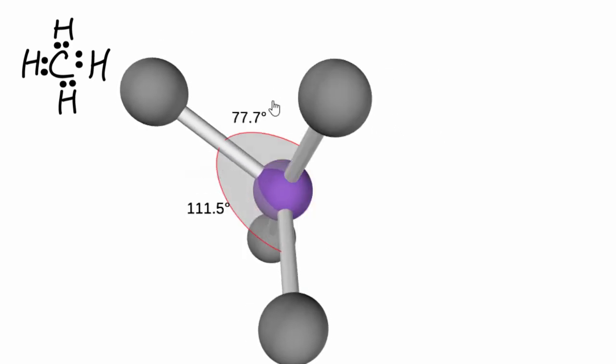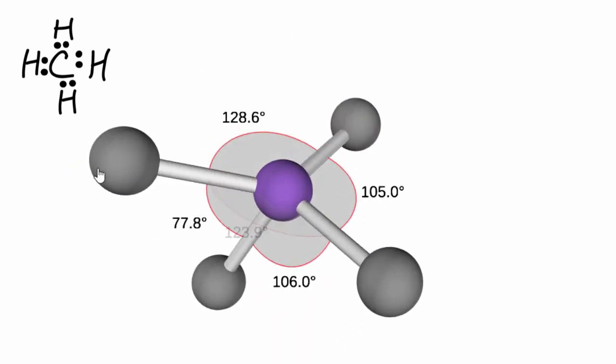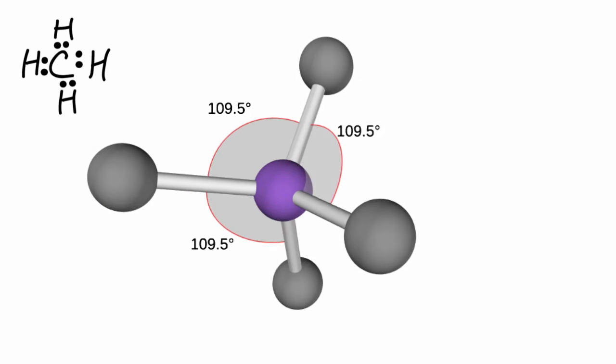You can see the Lewis structure doesn't really tell us about what shape it would be. We need to think about the valence shell electron repulsion in order to find the shape.